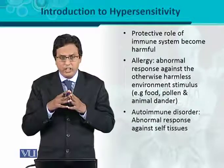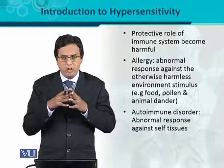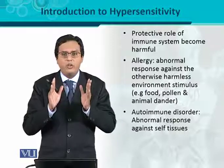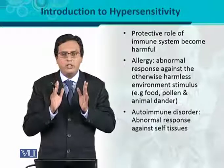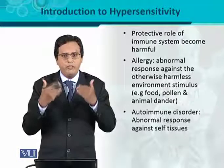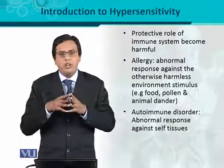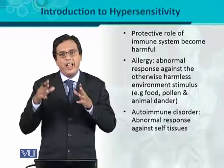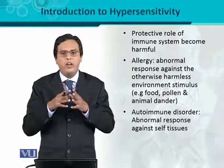Another important form of hypersensitivity is autoimmune disorders. Normally, the human body produces an immune response against foreign particles and invading agents to kill and protect the body. But if the immune response is activated in such a manner that it targets the body's own self-antigens and starts to damage them, that condition is abnormal — it is an overreaction or hypersensitivity reaction. Autoimmune disorder is therefore another form of hypersensitivity reaction, and understanding it is very important.